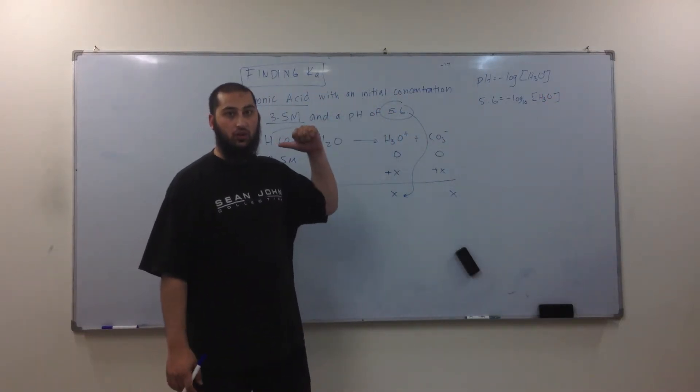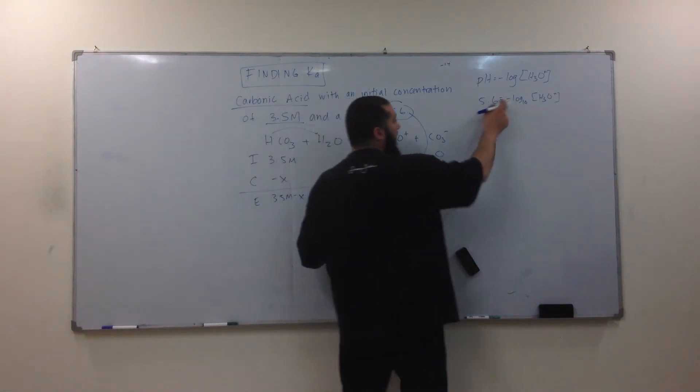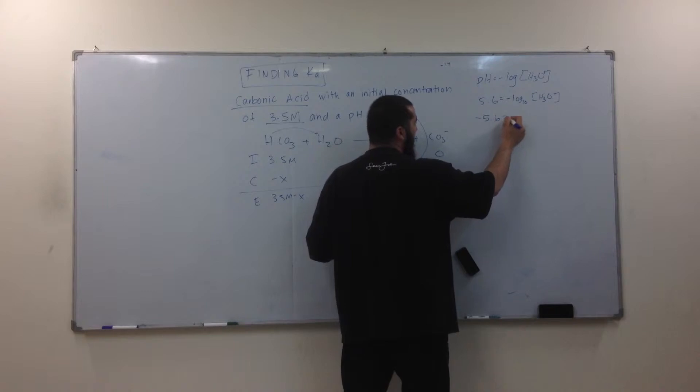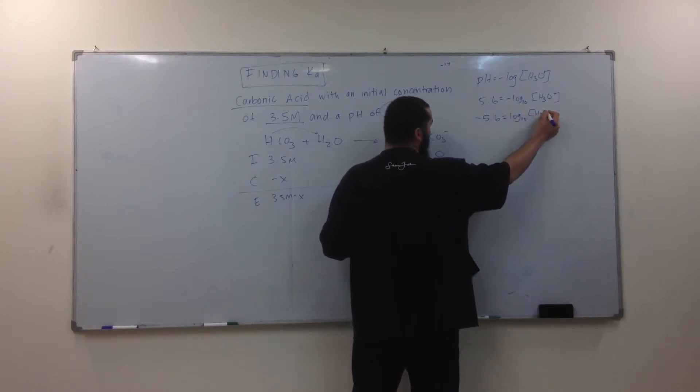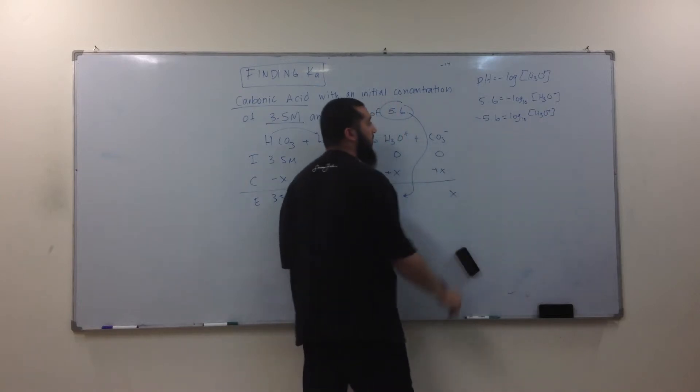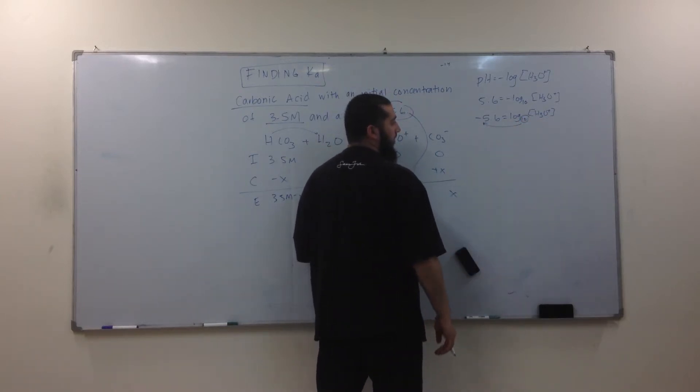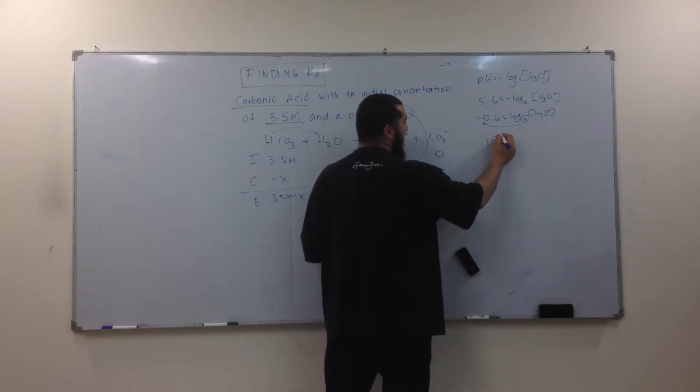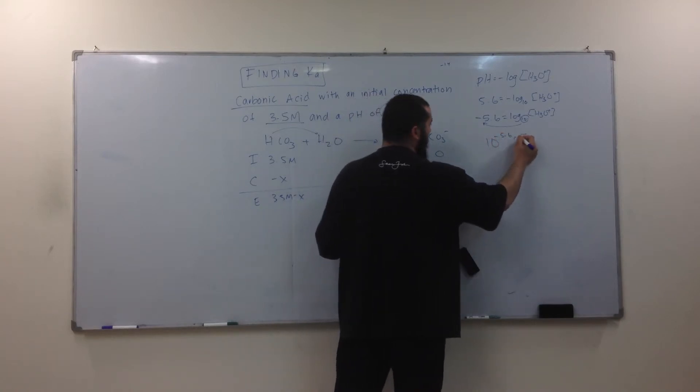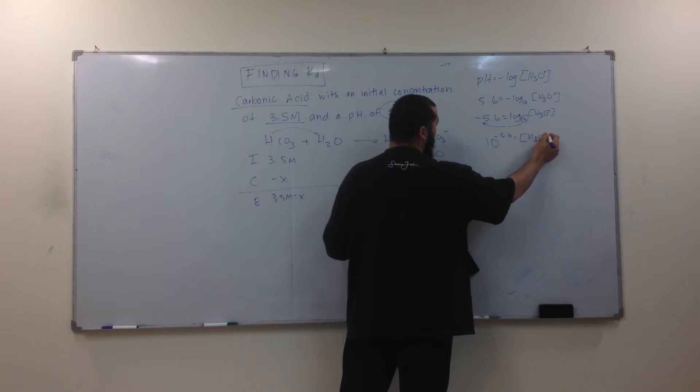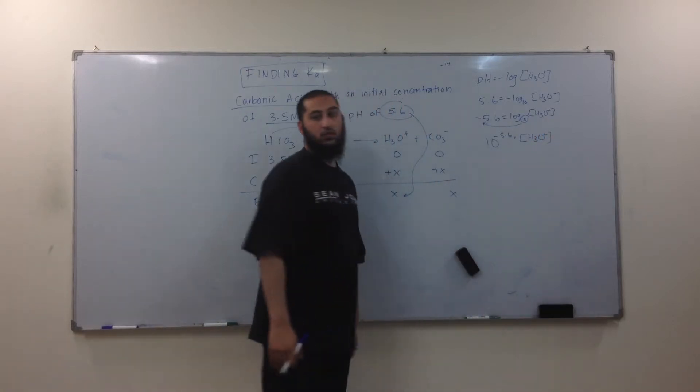So, it's going to be 5.6 equals negative log, what's the base? 10. Of H3O+. How do we find it? First bring the negative over. Inverse. Good. Yeah. First bring the negative, then do the inverse. So negative 5.6 equals log base 10 of H3O+. Then what's the inverse? You bring the 10, make it the base of this. So, 10 to the negative 5.6 equals the concentration of H3O+.